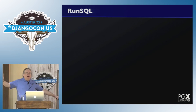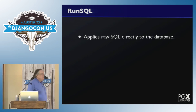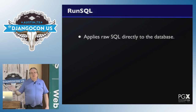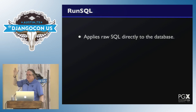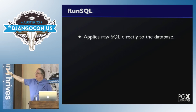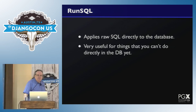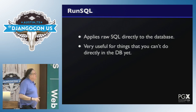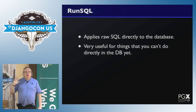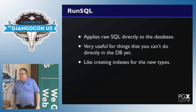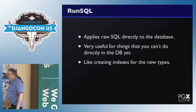RunSQL — you can probably guess what it does. It applies raw SQL directly to the database. Now everyone's saying, oh god, it's one of those database guys talking about raw SQL. But really, it's very, very handy. Specifically, it's very useful for things you can't do directly using the models yet, like creating indexes for some new types we're going to talk about.